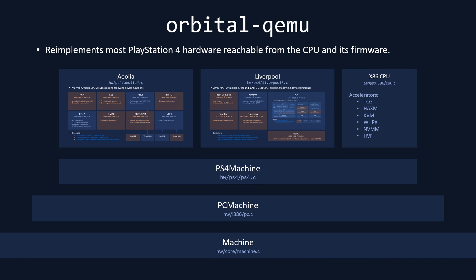Orbital QEMU creates a PS4 machine class which derives from the regular PC machine implementation in QEMU. There are three main areas: first, it uses the regular x86 CPU device implementation which executes x86 code either via the TCG JIT translator or any of the hypervisors listed, with Haxm being the priority and the only one able to run the entire PS4 software stack. Then there is Liverpool — the APU covering GPU, CPU cores, and Northbridge — and Aeolia, an ARM SOC which exposes some peripherals.